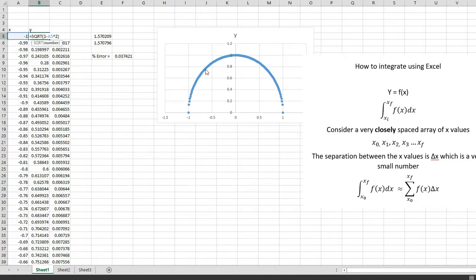So that's what I programmed here. You can see it's half of a circle, going from minus 1 to plus 1. So I chose that because we know what the integral is. It's the area under the curve. It's the area of a semicircle.